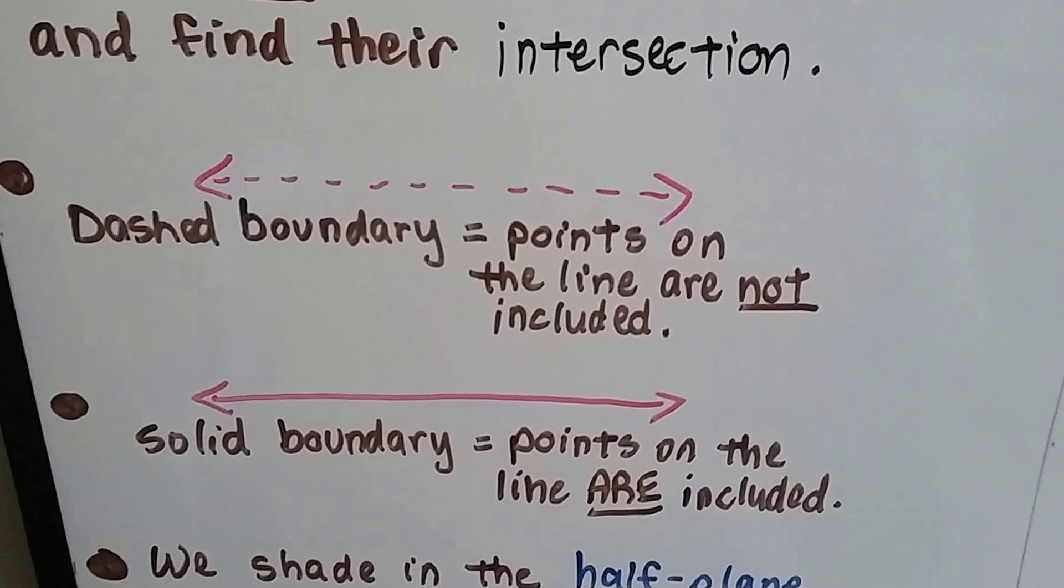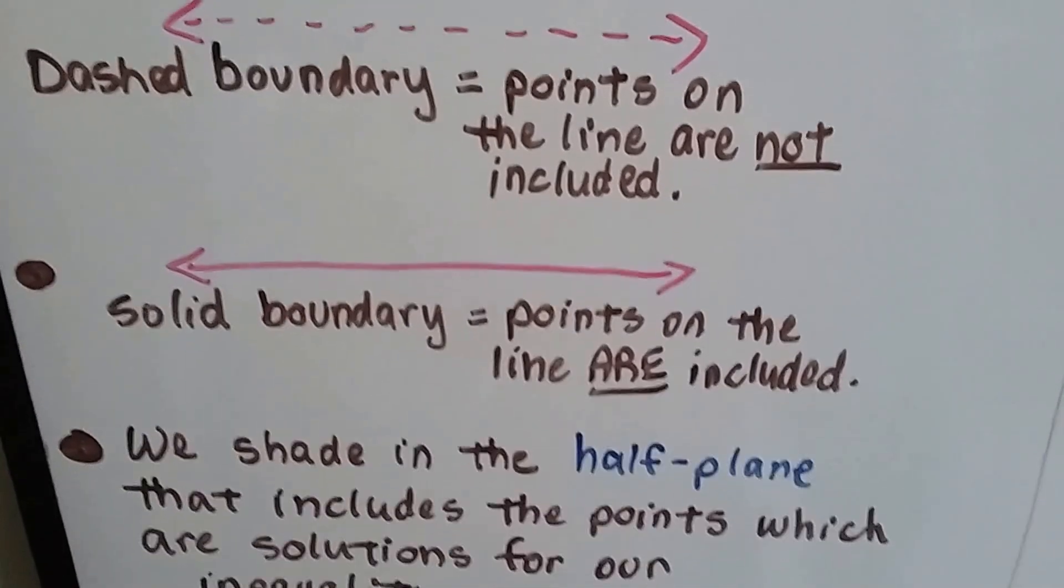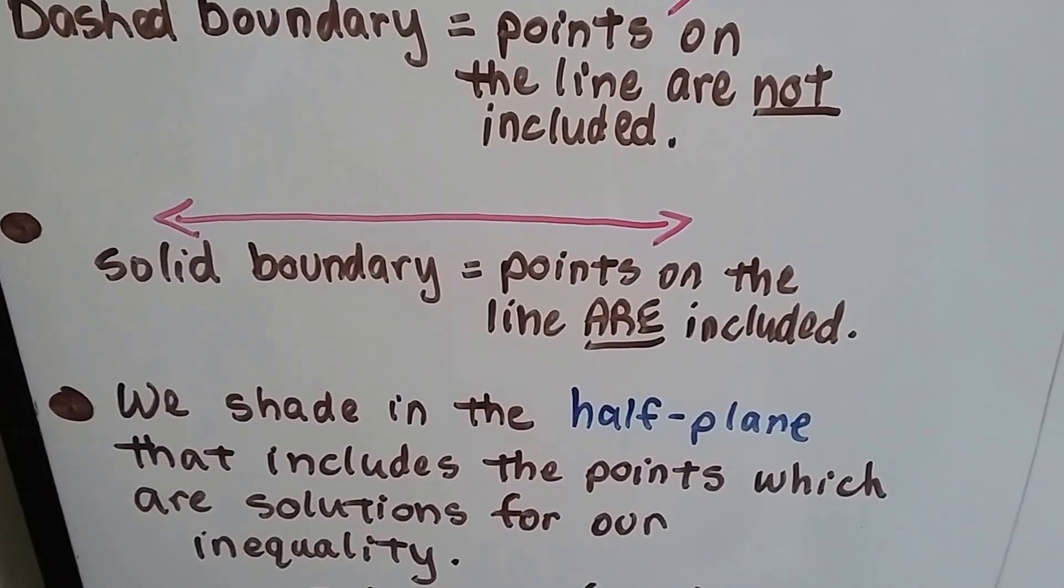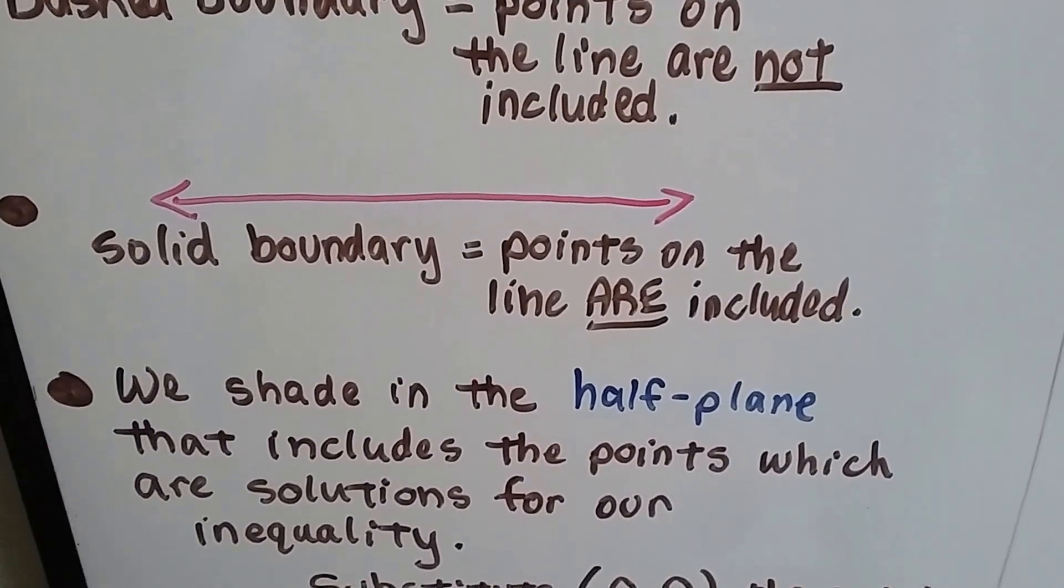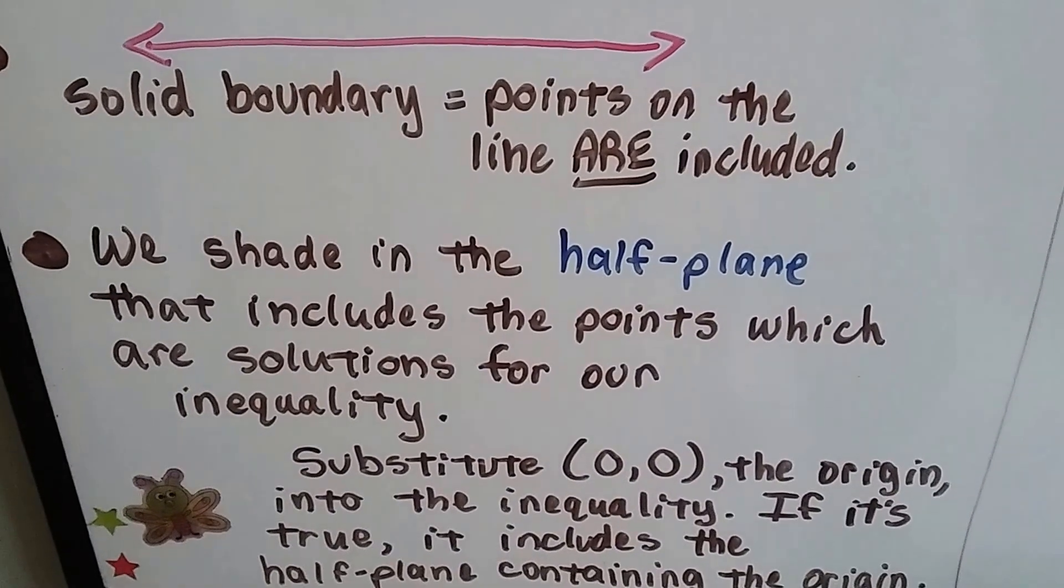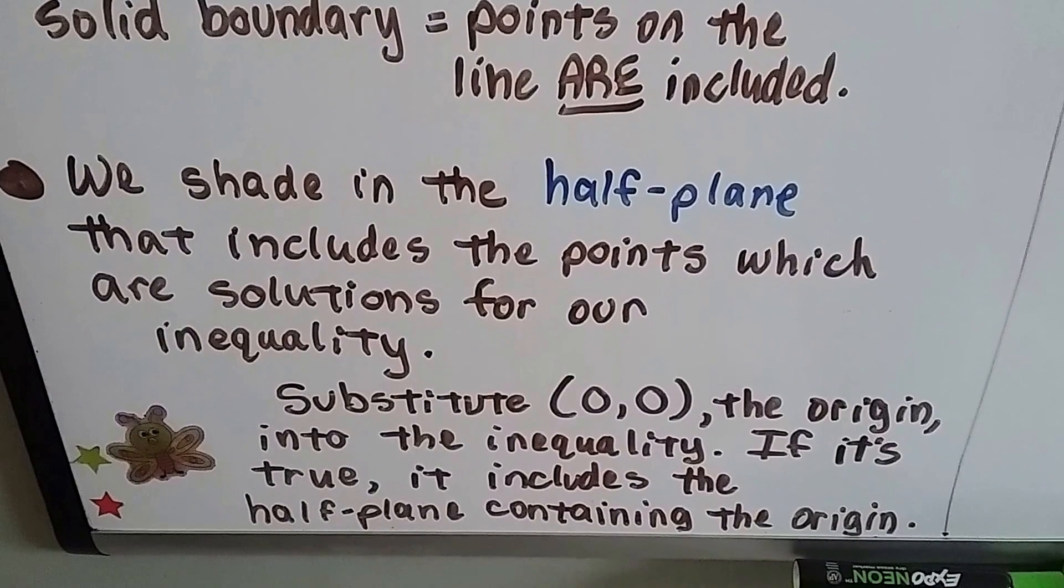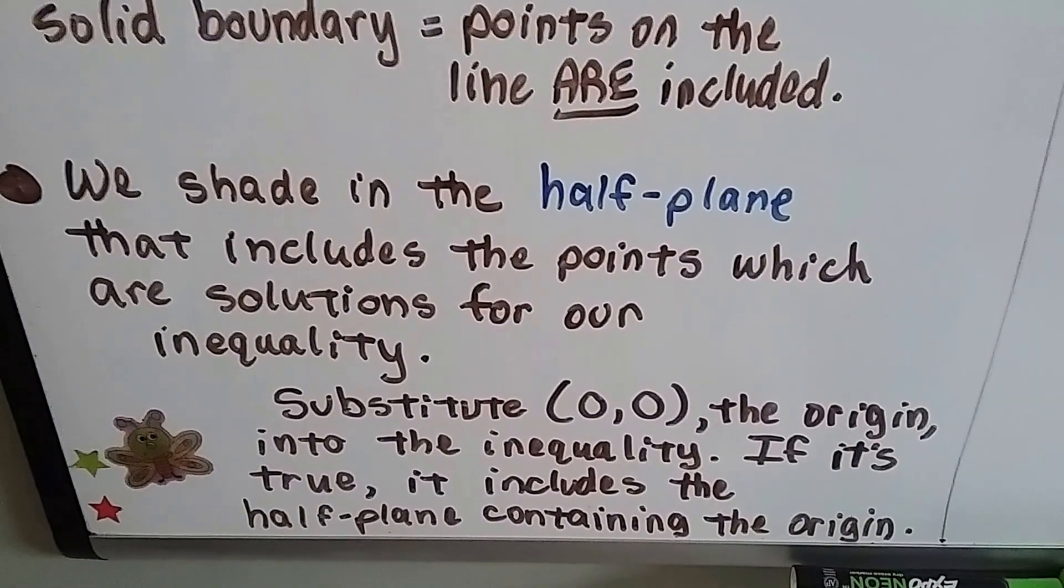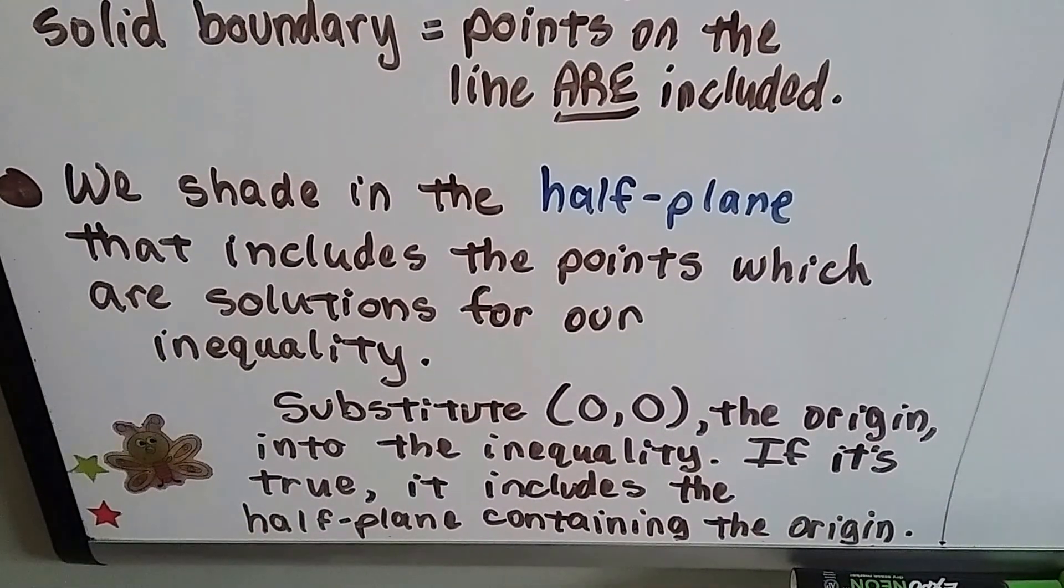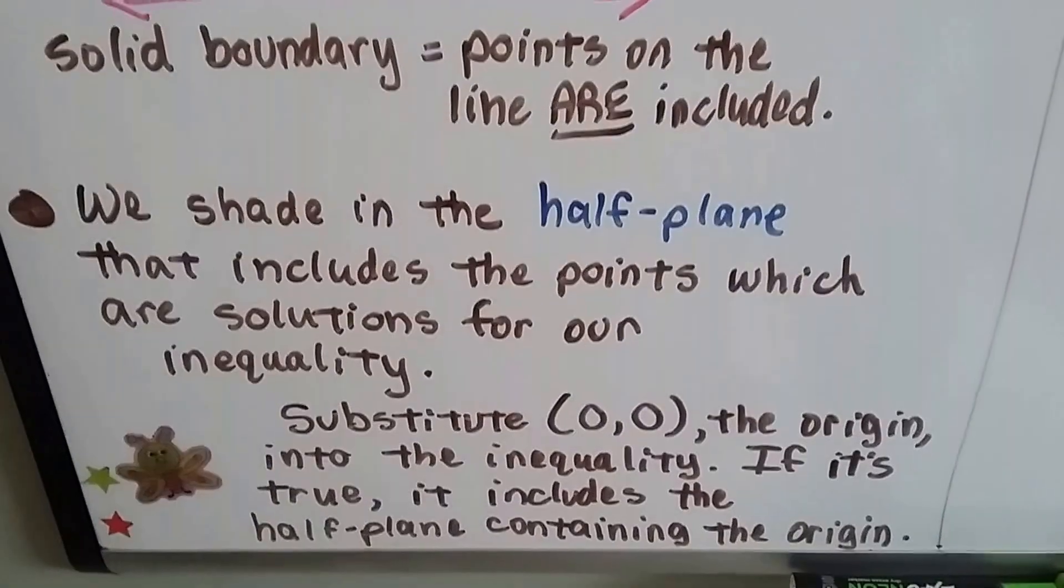Remember, if it's a dashed boundary, that means the points on the line are not included in the solution. And if it's a solid boundary line, the points on the line are included in the solution. We shade in the half plane that includes the points which are solutions for our inequality. We substitute 0, 0, the origin, into the inequality. If it's true, it includes the half plane that contains the origin.